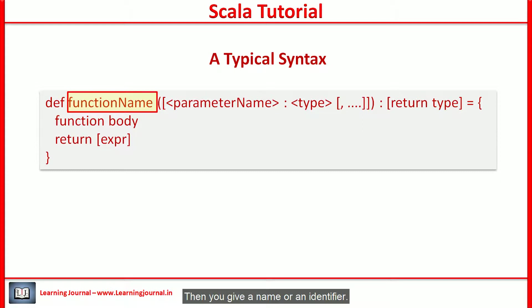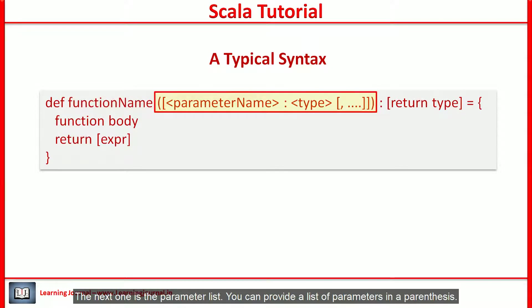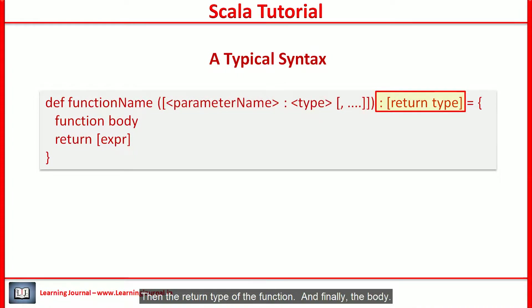Then, you give a name or an identifier. The next one is the parameter list. You can provide a list of parameters in parenthesis. Then, the return type of the function. And finally, the body.